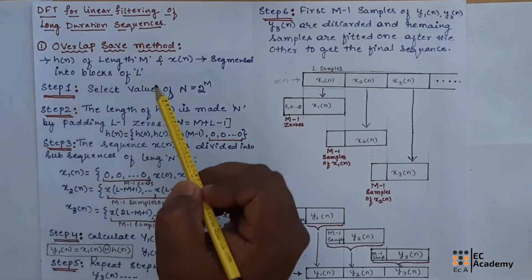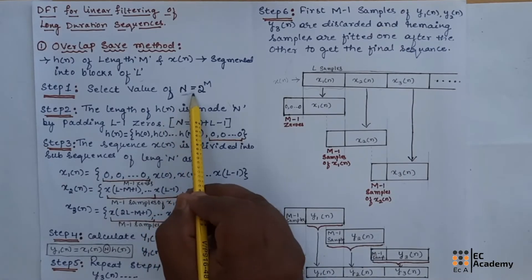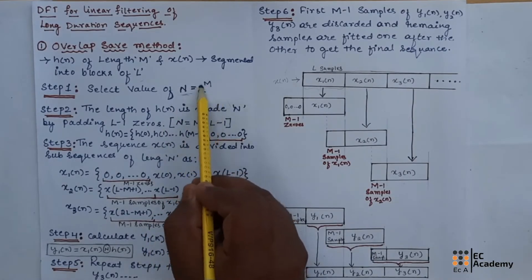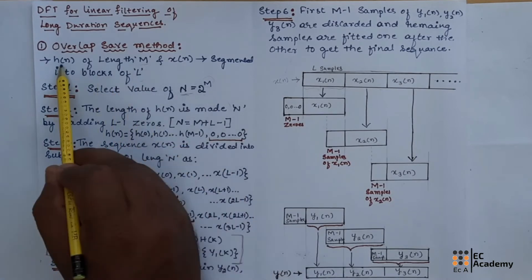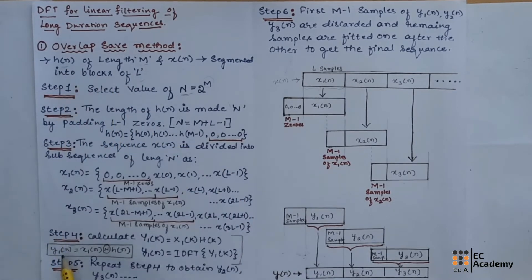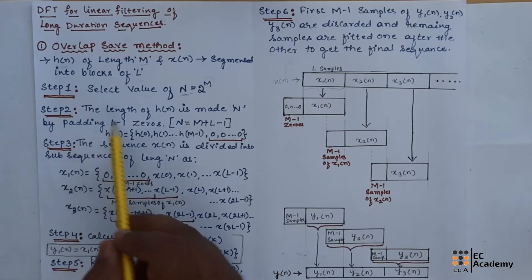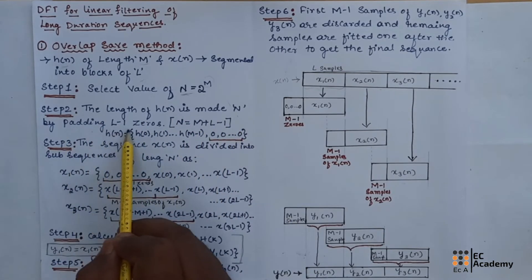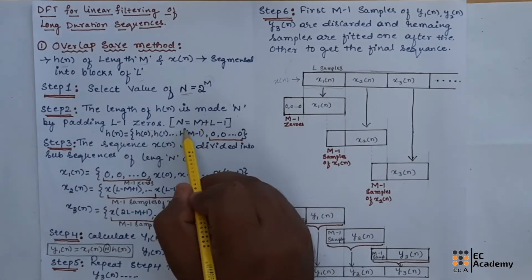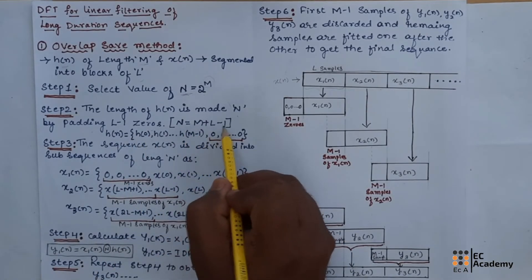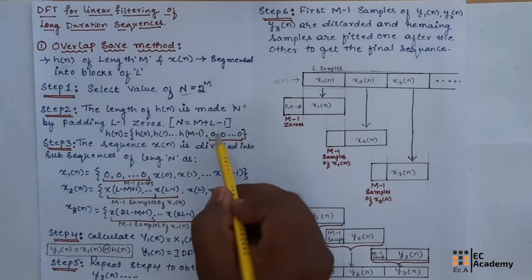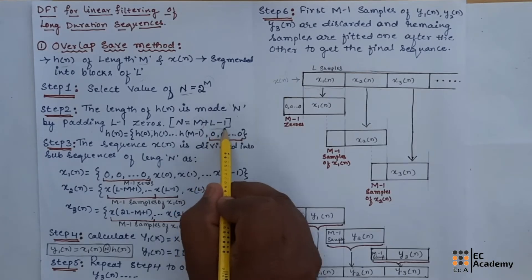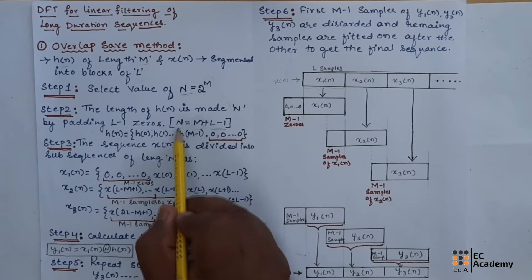The first step is to select N equal to 2 to the power of m, where m is the length of h(n). The second step is the length of h(n) is made equal to N by padding l minus 1 zeros. Since N is equal to m plus l minus 1, and the length of h(n) is m, we will pad l minus 1 zeros to h(n) to make the length of h(n) equal to N.